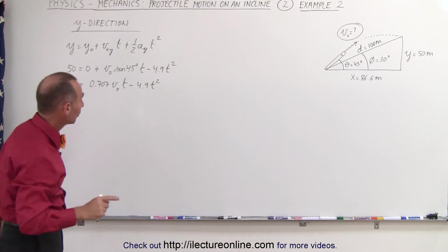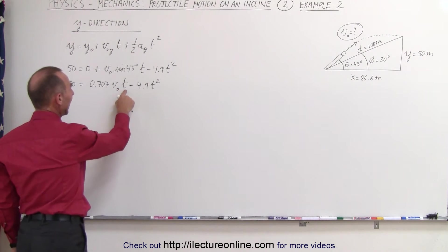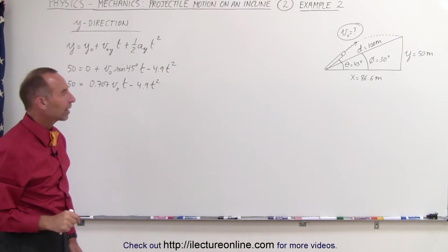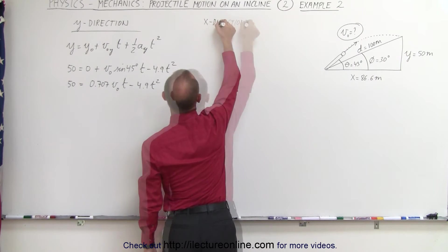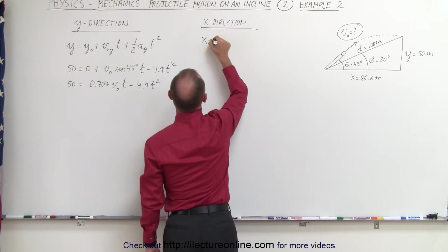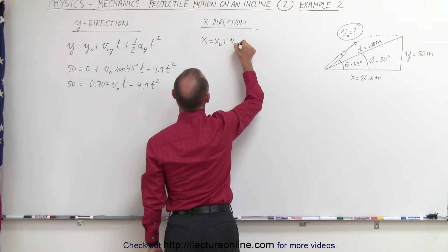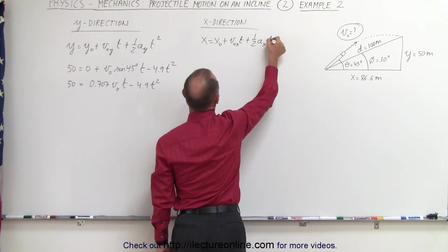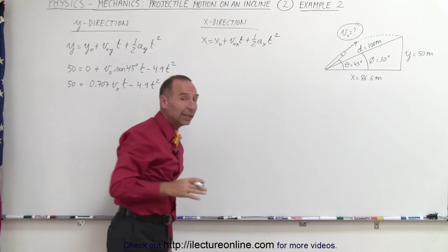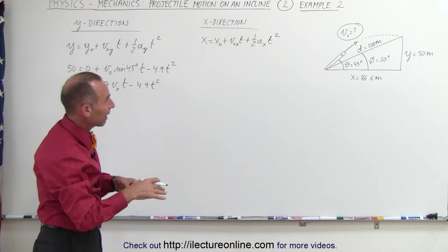But notice in this equation we have two unknowns: v initial and t, which means we need the second equation. Let's now try the x direction. X equals x sub-naught plus v sub-naught in the x direction times time plus one-half a in the x direction times time squared.